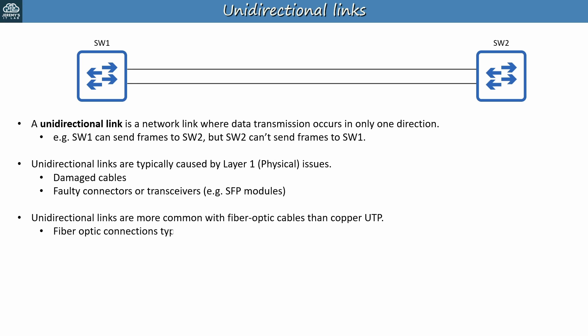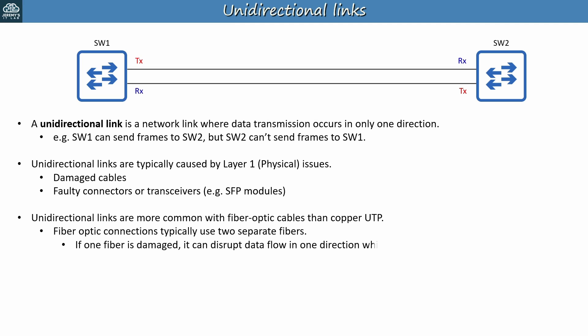As we covered back in the beginning of the course, fiber optic connections typically use two separate fibers. The TX (transmission) side of SW1 connects to the RX (reception) side of SW2, and the TX side of SW2 connects to the RX side of SW1. Although they are separate fibers, these two fibers are considered one cable, connecting one interface on SW1 to one interface on SW2 and allowing both to send and receive data. The problem is that if one fiber is damaged, it can disrupt data flow in one direction while the other remains unaffected.